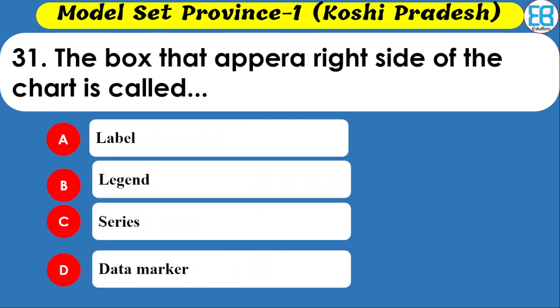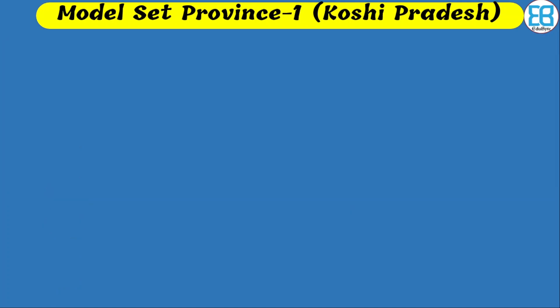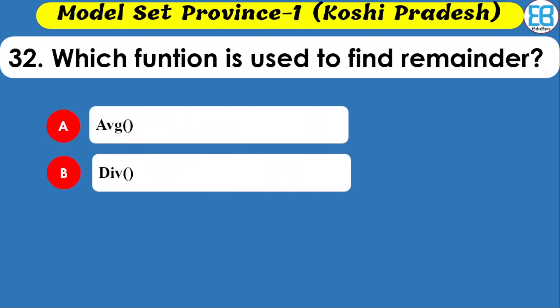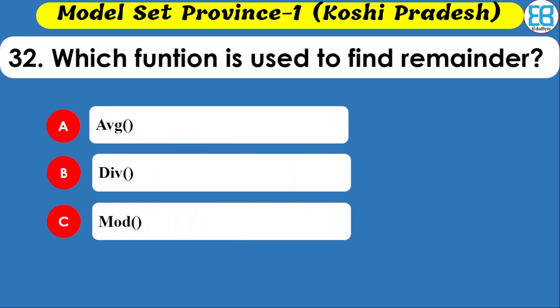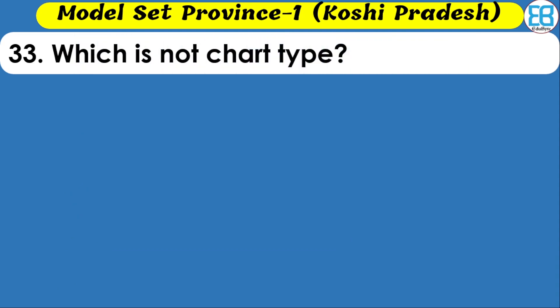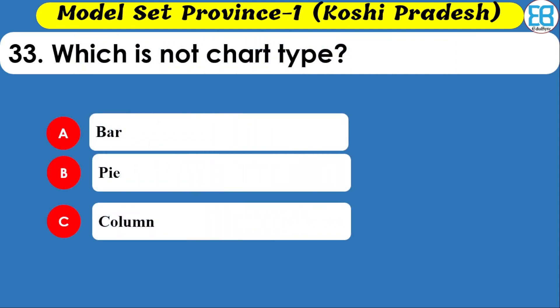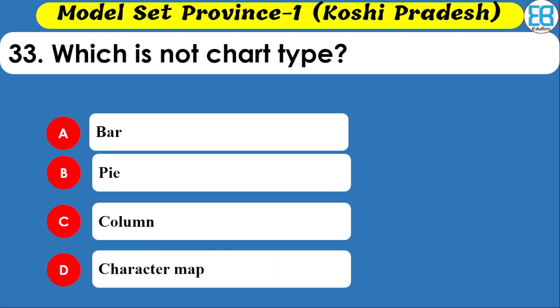Which function is used to find the remainder? Options are DIV, MOD, and ACT. The correct option is MOD — MOD function finds the remainder. Which is not a chart type? Options are bar, column, and character map. The correct option is character map — it is not a chart type.